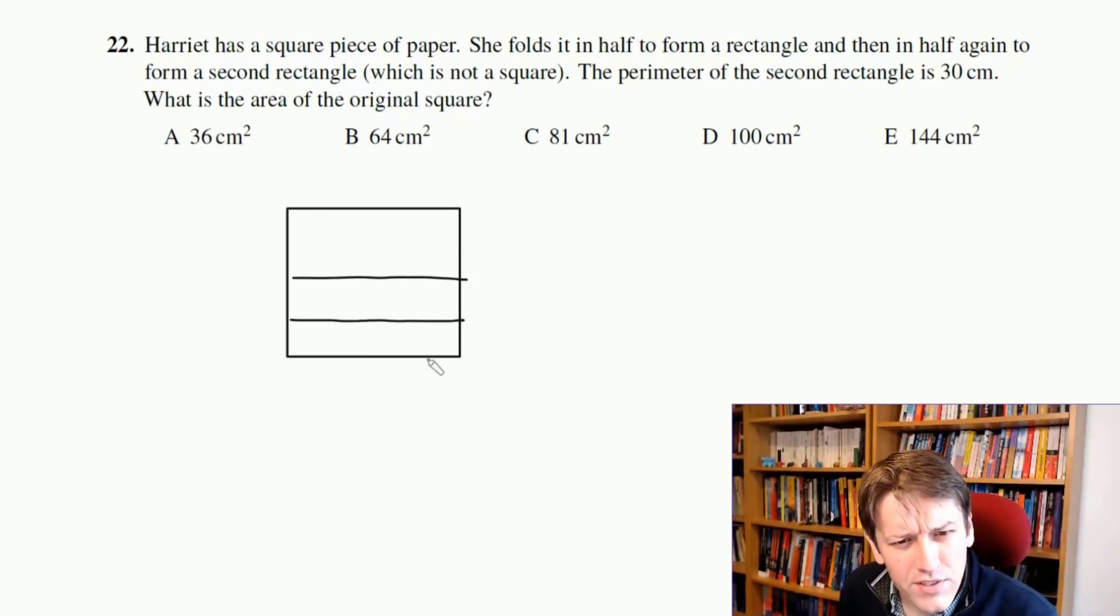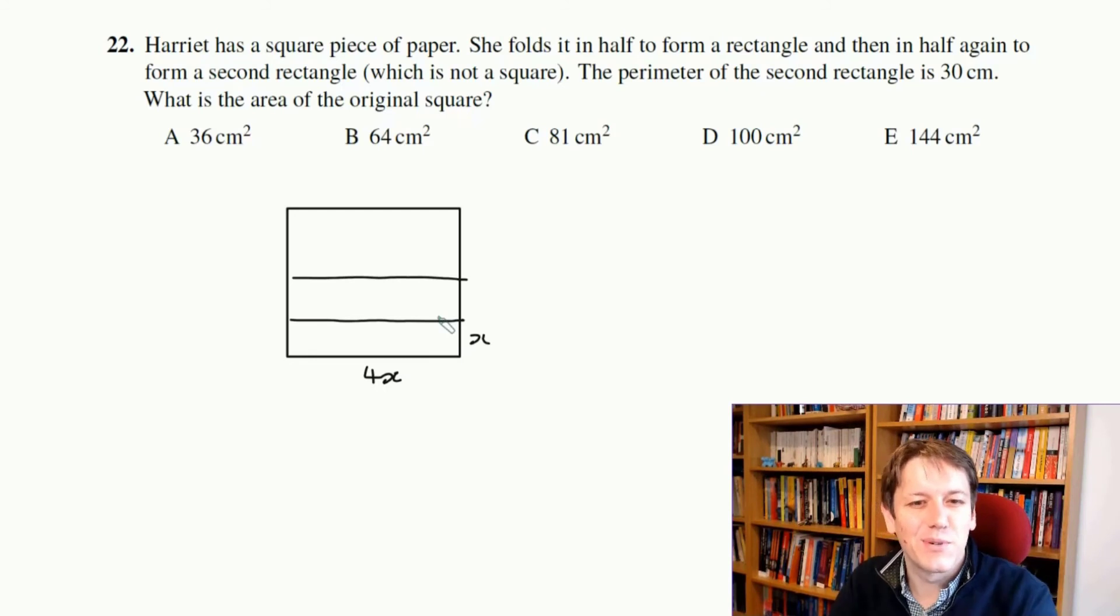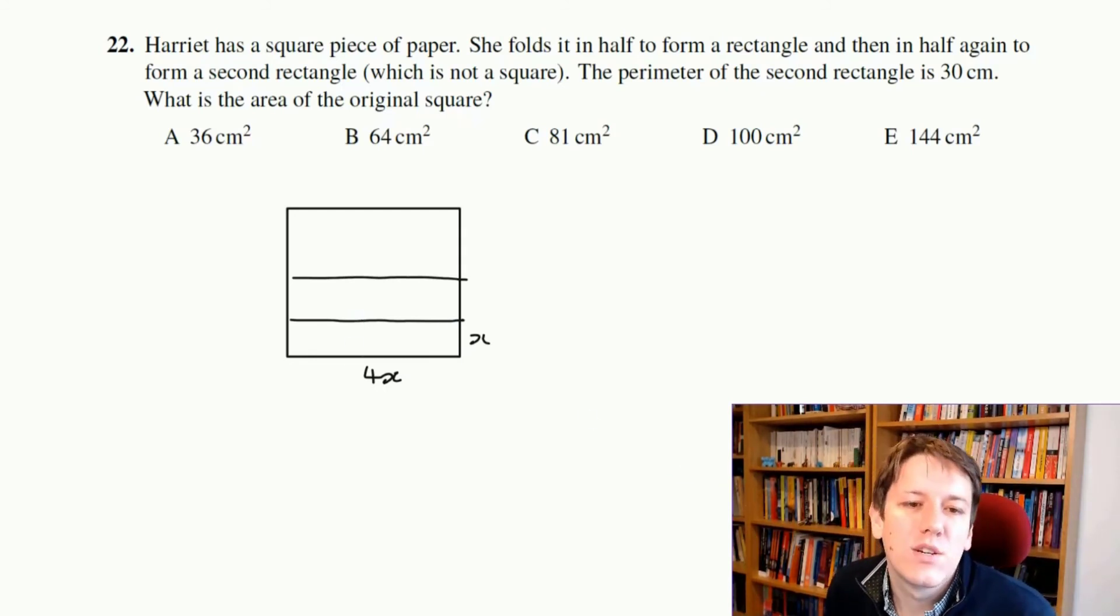Now, rather than doing x and a quarter x here, it's easier to do 4x and x, so if you want a quarter of something, make the something a quarter of 4x. And then you can see the perimeter of the rectangle we're left with here is 4x plus 4x plus x plus x, which is 10x.